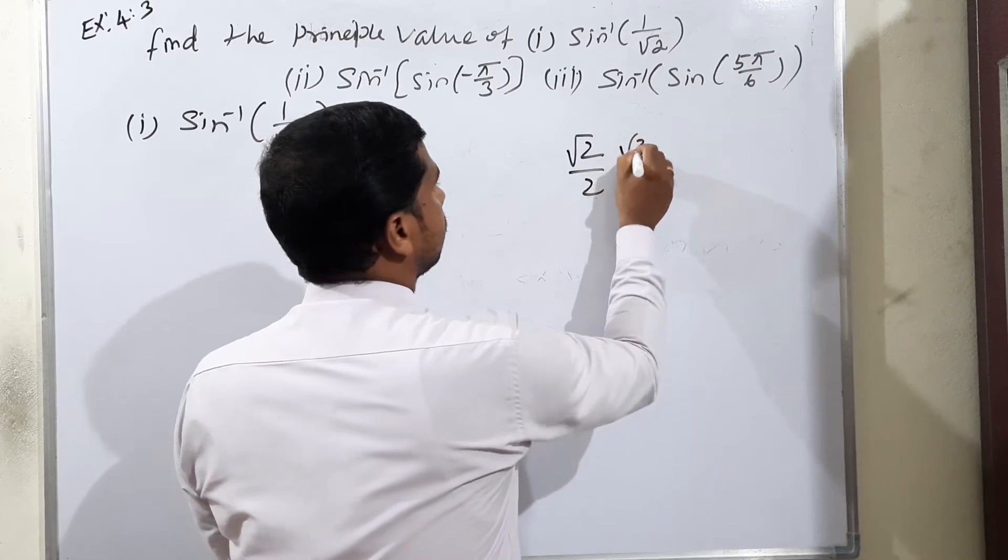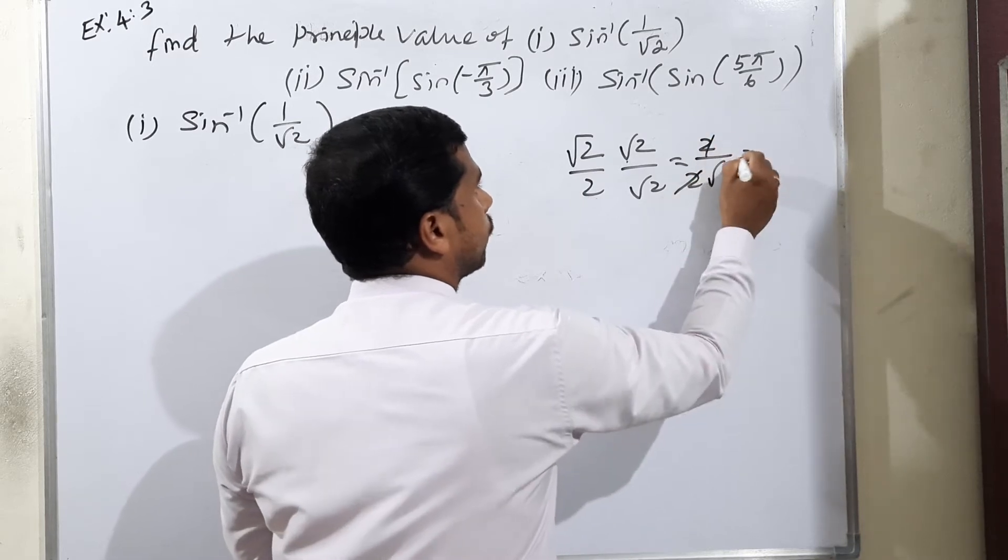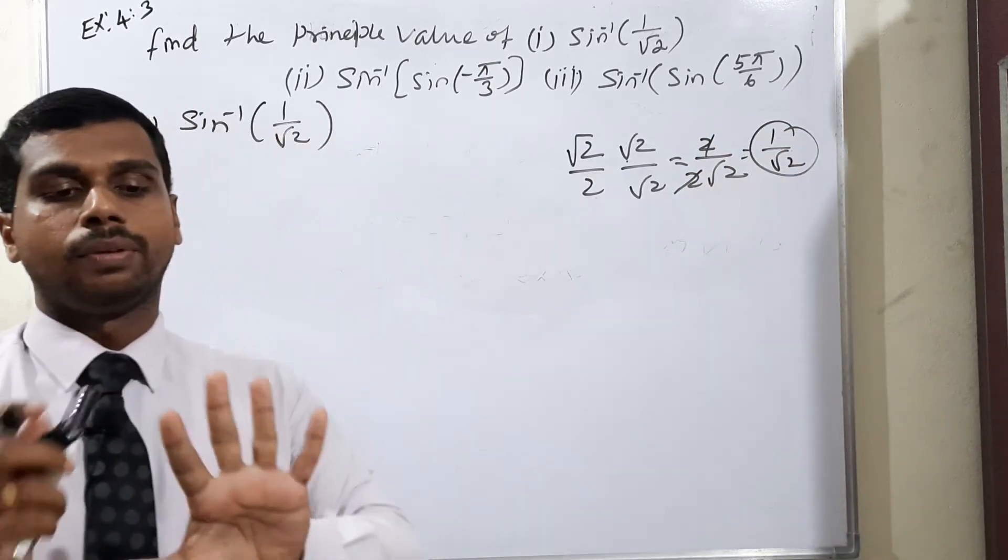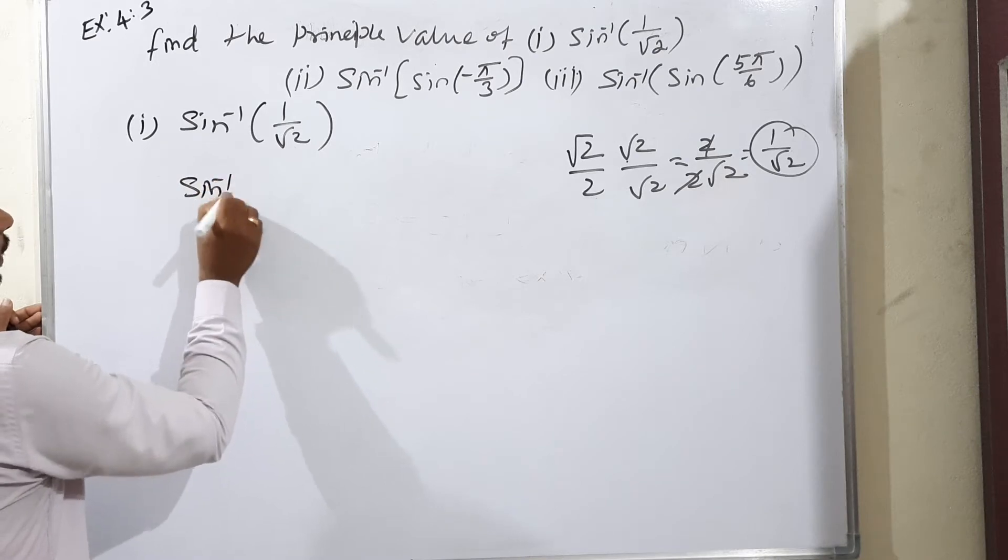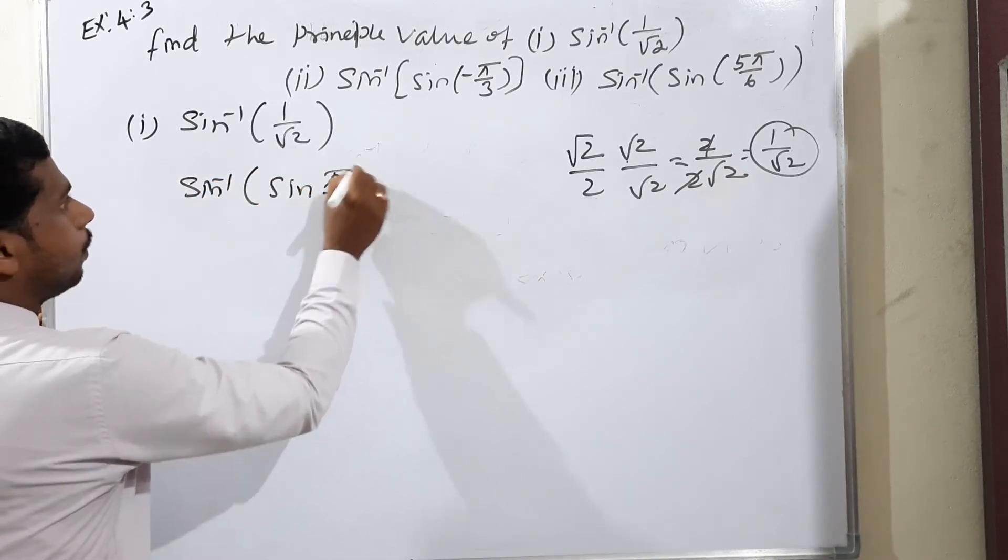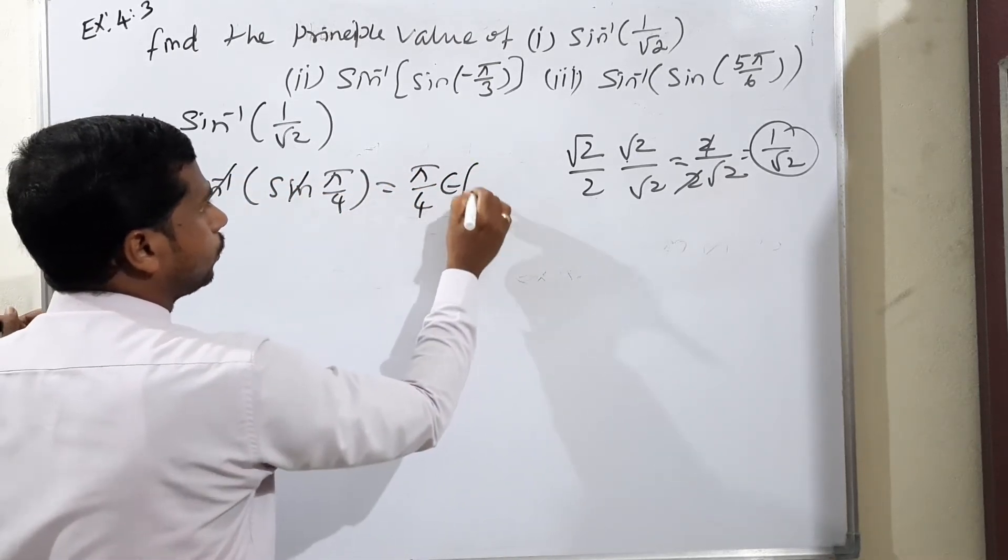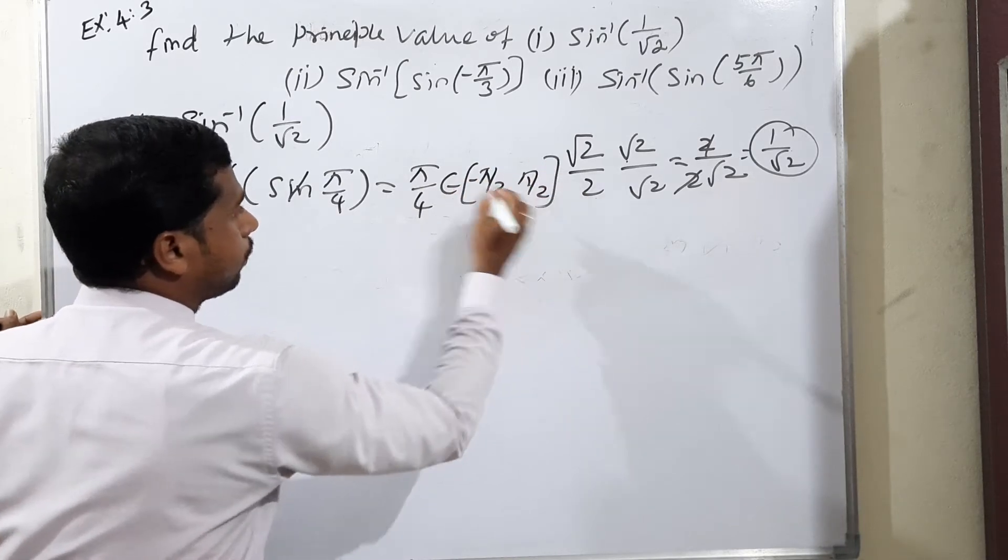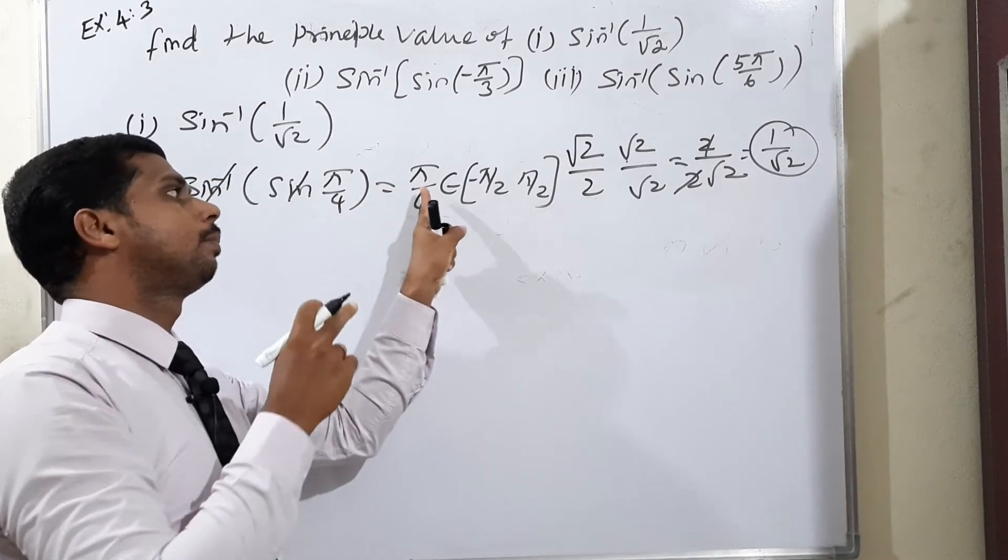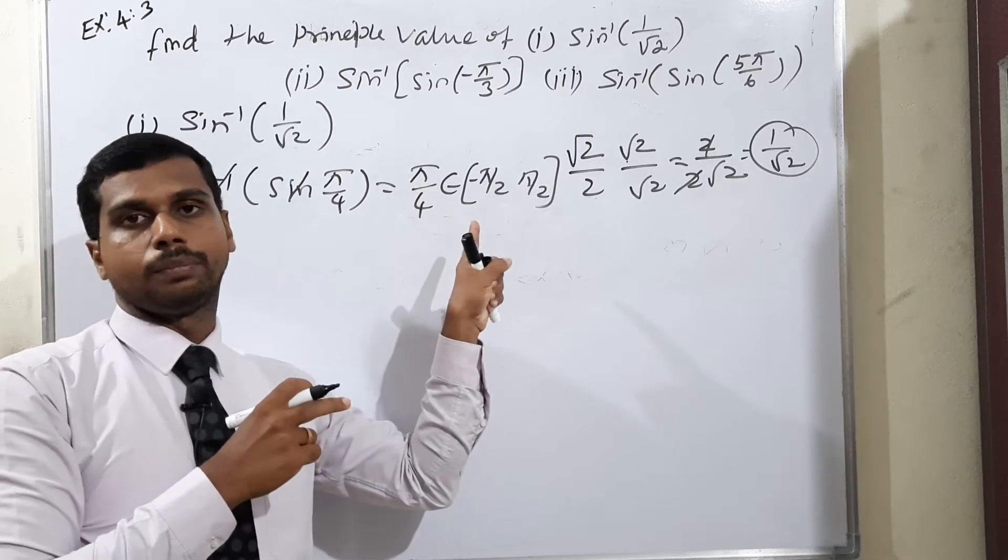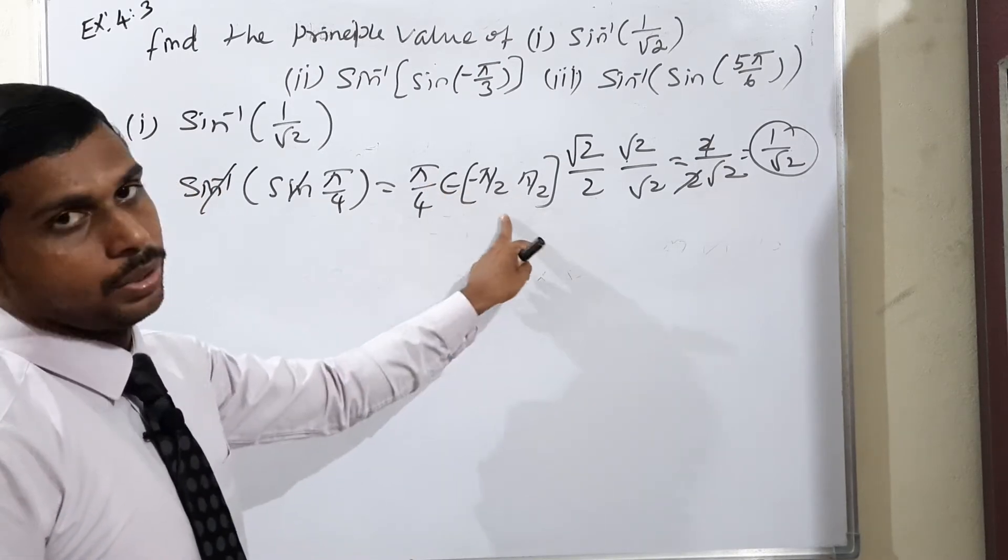So √2 into √2, value 2. Now 2 to 2 cancel, we get 1 by √2. That means middle finger value in radians, π/4. So sin inverse sin of π/4 is equal to, definitely sin inverse and sin cancel. π/4 belongs to -π/2 to +π/2. Now let's check, negative 90 to positive 90. Cancel means value is 45. 180 divided by 4. Condition is clear in the interval. First condition is clear.